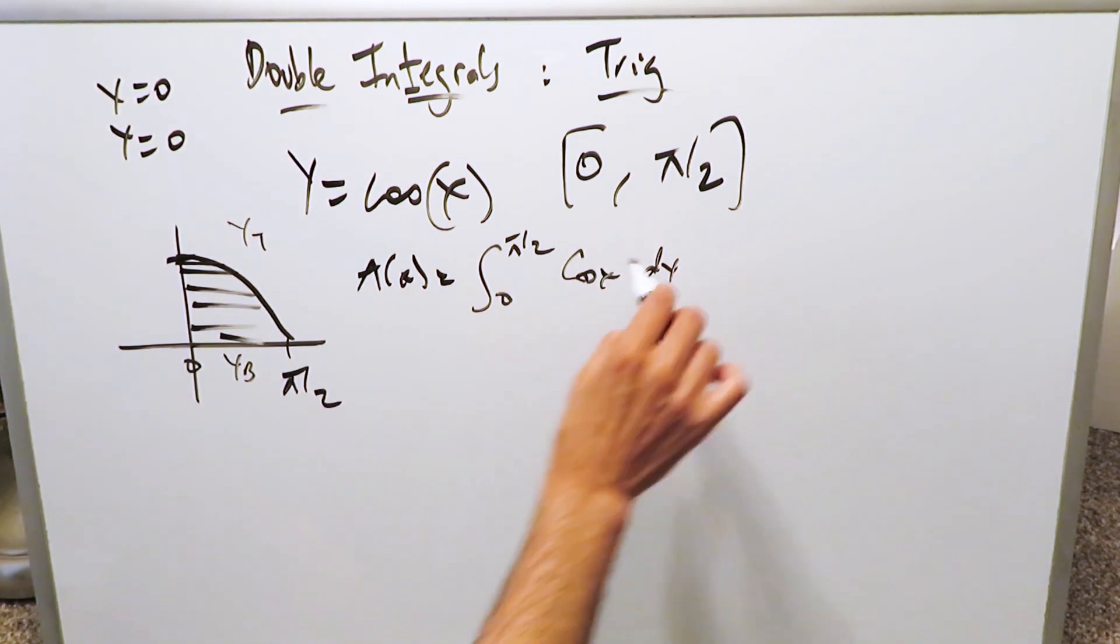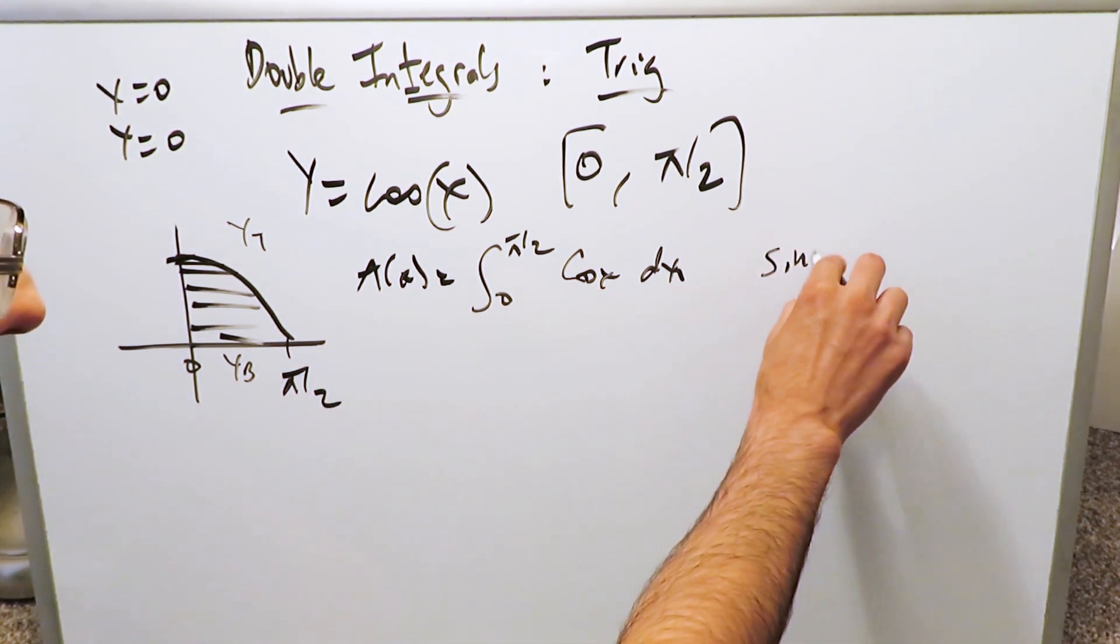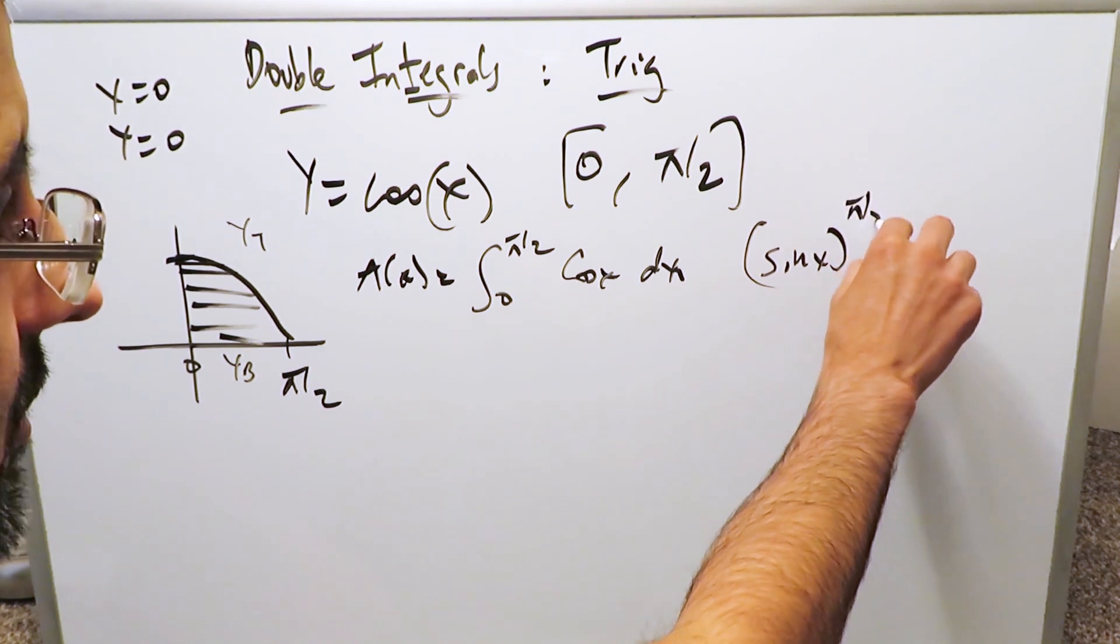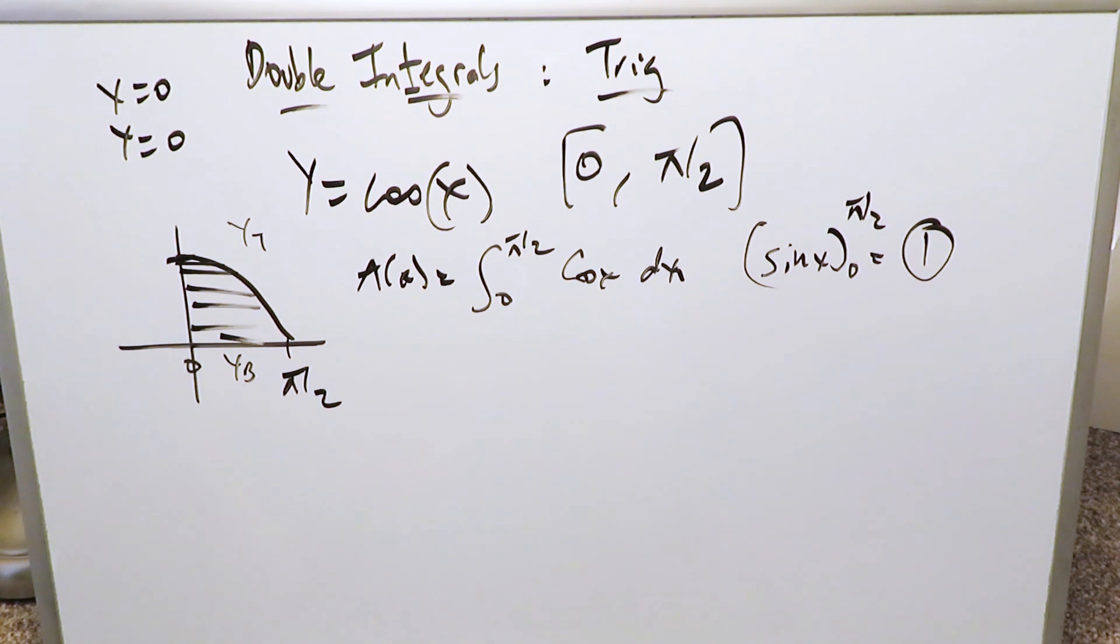We have a top boundary curve and a lower boundary curve which is your x-axis. Top boundary curve is just cosine x, lower boundary curve zero. The antiderivative sine x from pi over two and zero, upper limit lower limit, and your area should come out one and that's our reference value.